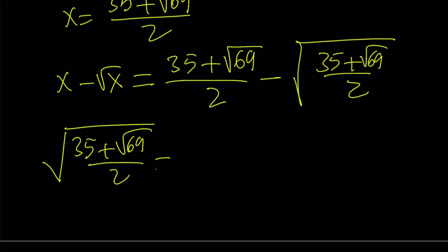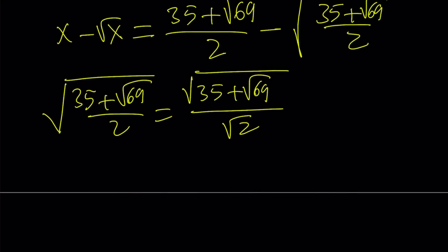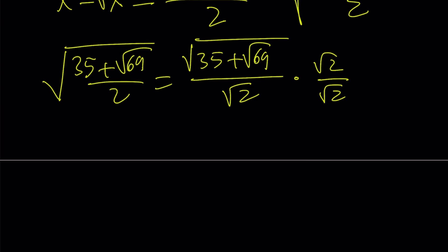Now, this expression obviously can be written like this. We can separate the top and the bottom. And now multiply this by root 2 over root 2 to get rid of the radical 2. And also, we want to get something nicer inside.